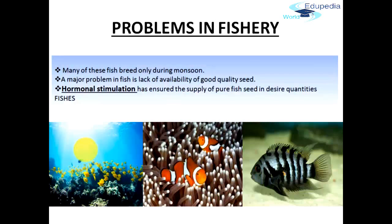One problem with composite culture is that many of these fish breed only during certain monsoon periods, not throughout the entire year. Even if fish seed is collected from the wild, it can be mixed with that of other species. A major problem in fish farming is the lack of availability of good seed. To overcome this problem, ways have now been worked out to breed these fish in ponds using hormonal stimulation.